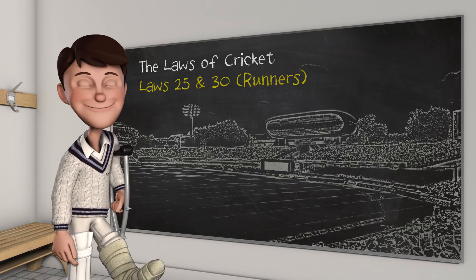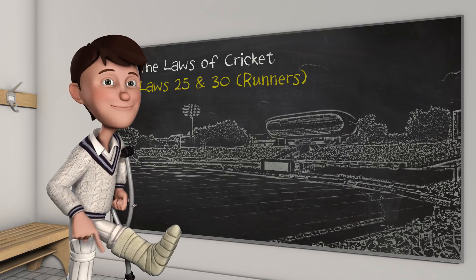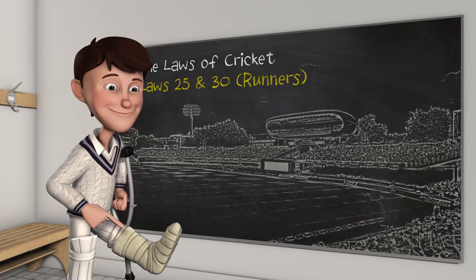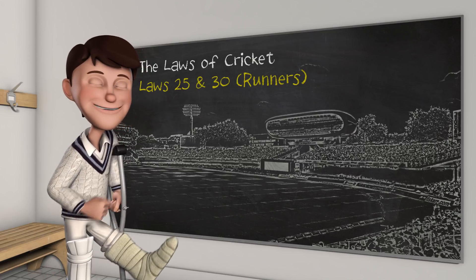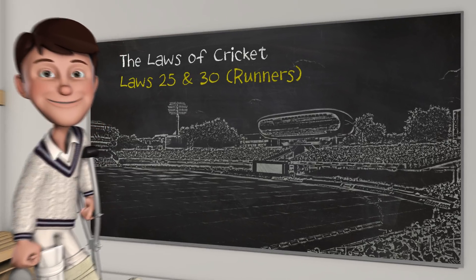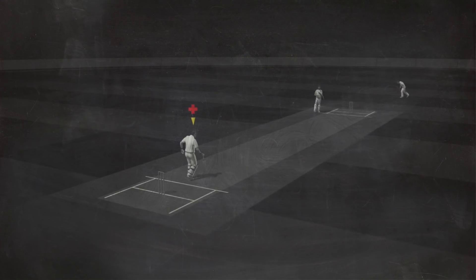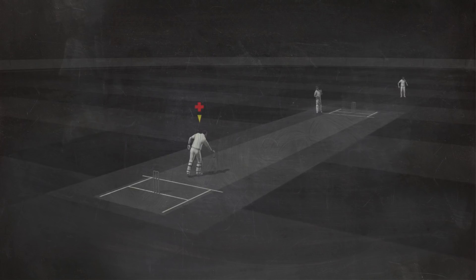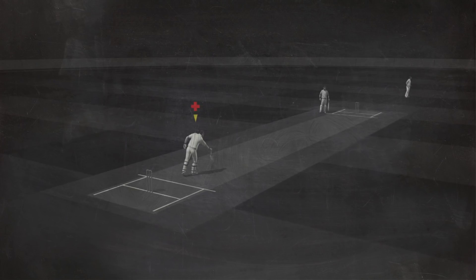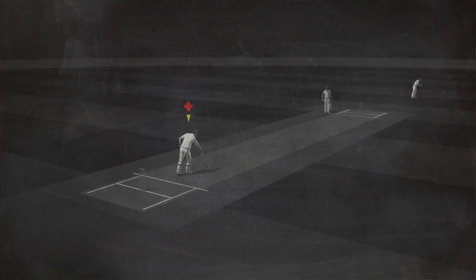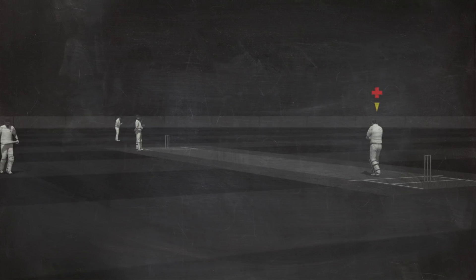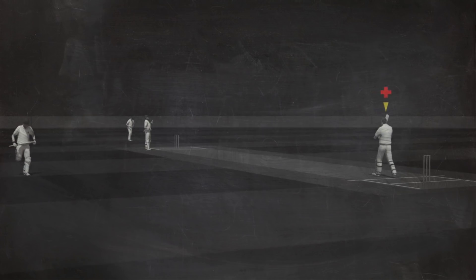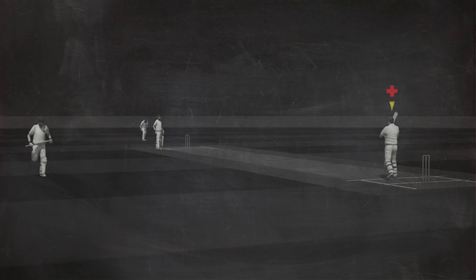Runners. If a batsman sustains an injury during the match, he or she is allowed, at the umpire's discretion, to select a runner — another member of the batting team — to do their running between the wickets.